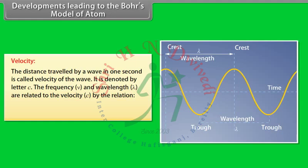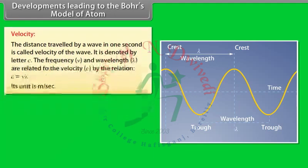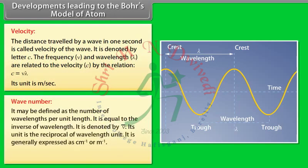Velocity: The distance travelled by a wave in 1 second is called the velocity of the wave, denoted by c. Frequency and wavelength are related by: c = nu × lambda, with units of meters per second. Wave number may be defined as the number of wavelengths per unit length; it equals the inverse of wavelength, denoted by nu-bar, expressed as 1/cm or 1/m. Nu-bar = 1/lambda.